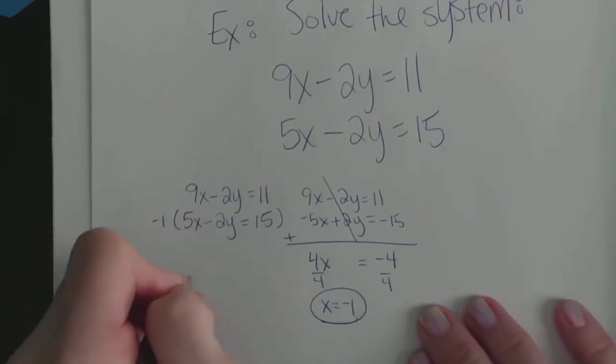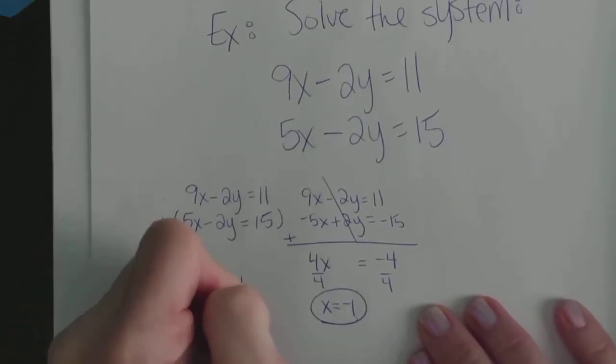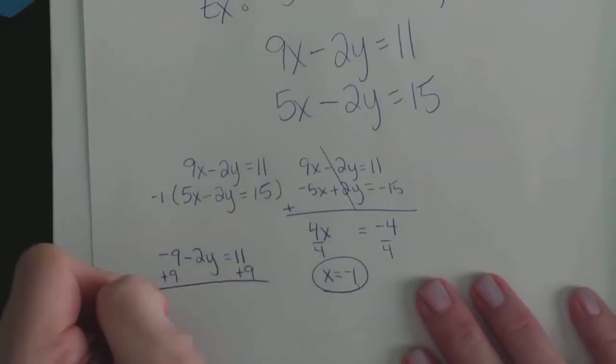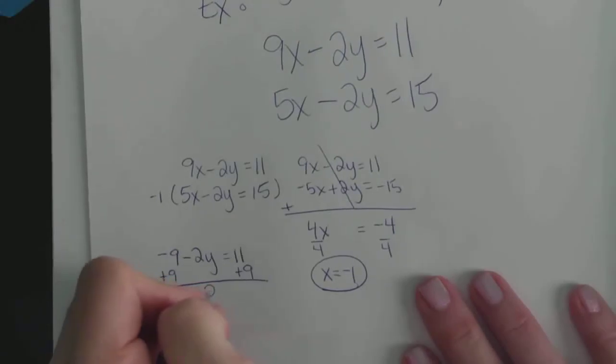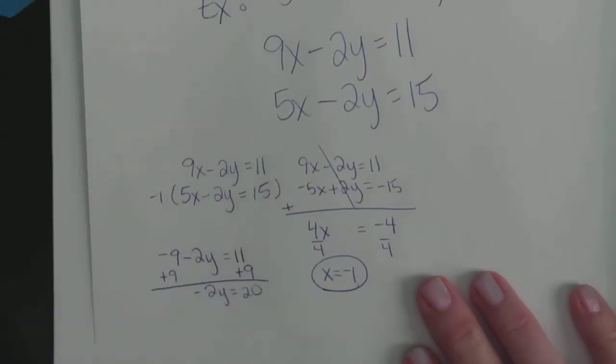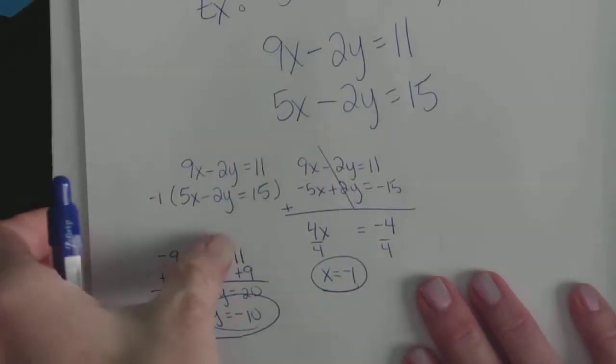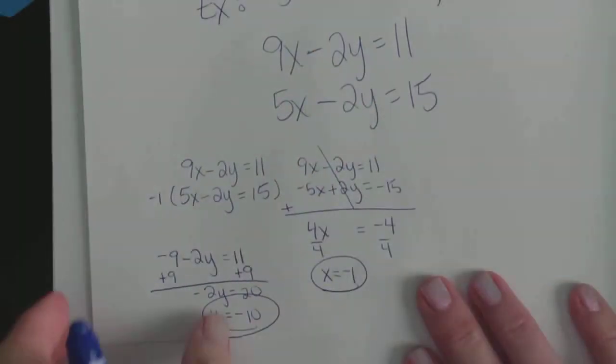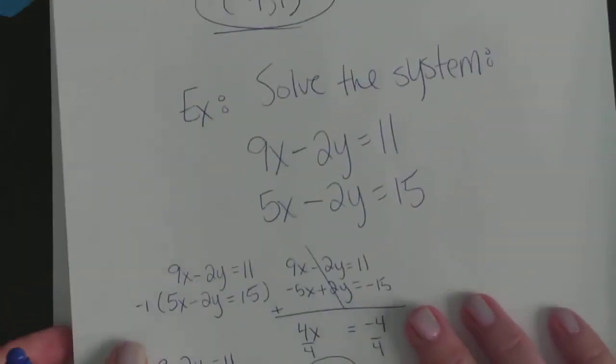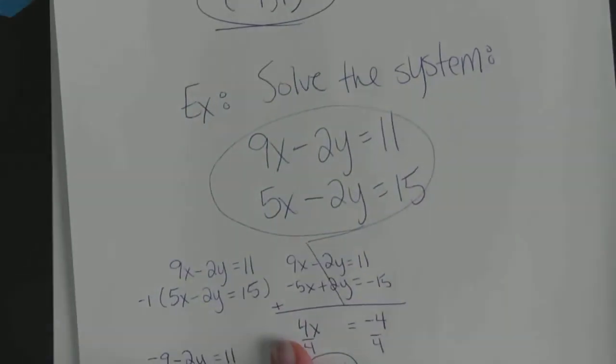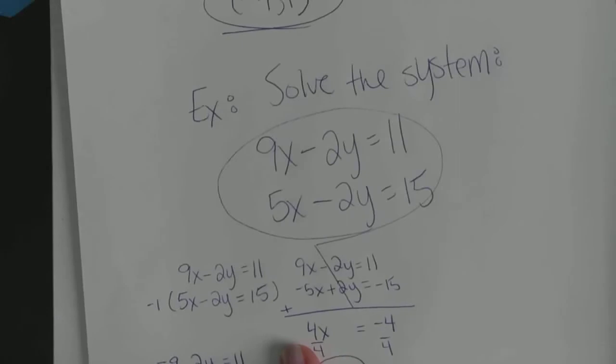I can take that back to the top equation here. 9 times negative 1 is negative 9 minus 2Y equals 11. I can add 9 to both sides, which gives me negative 2Y equals 20. And if I divide both sides by negative 2, my Y is negative 10. So it's not too hard to do by hand. I just wanted to show you that answer to see if the calculator is truly getting the same answer. So now let's solve this on the calculator.